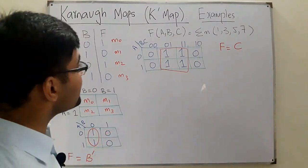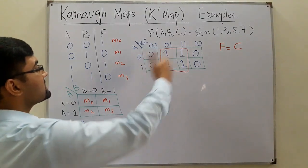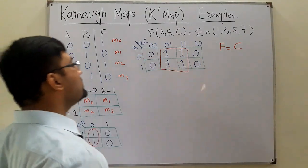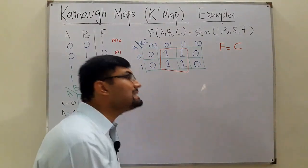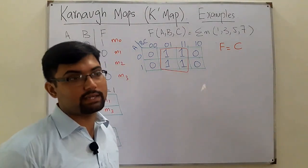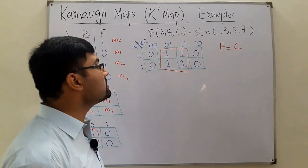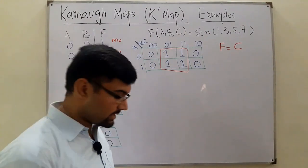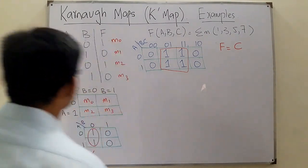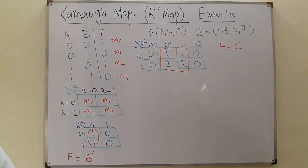If you were solving this using Boolean algebra rules, it would take at least four to five steps. But with the Karnaugh map, we got the answer directly.